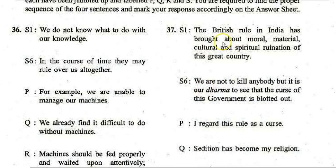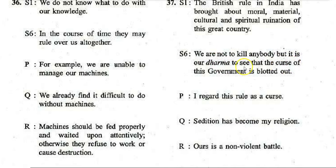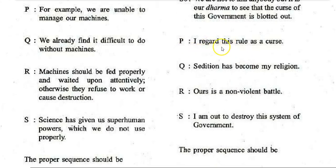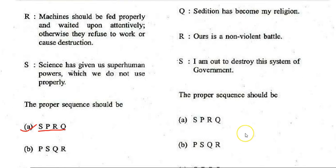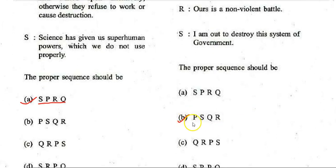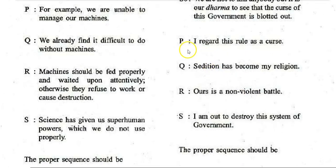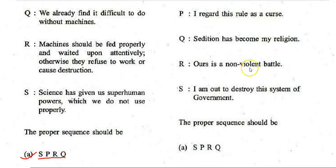Second ordering question: S1 — 'The British rule in India has brought about moral, material, cultural and spiritual ruin of this great country.' S6 — 'We are not to kill anybody, but it is our dharma to see that the curse of this government is blotted out.' Middle sentences: P. I regard this rule as a curse. Q. Sedition has become my religion. R. Ours is a non-violent battle. S. I am out to destroy this system of government. The correct sequence is P, S, Q, R.